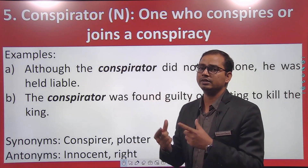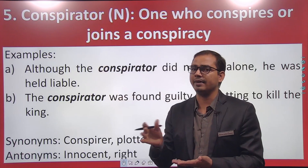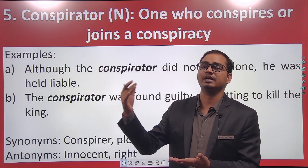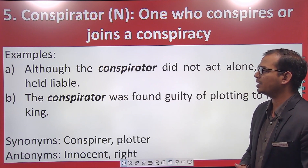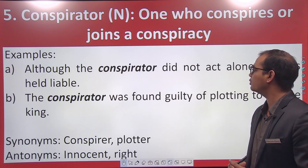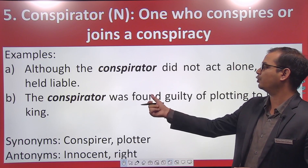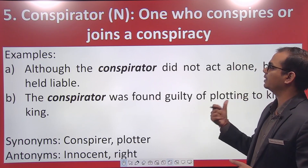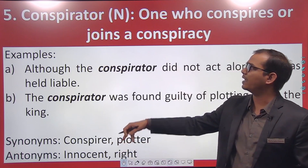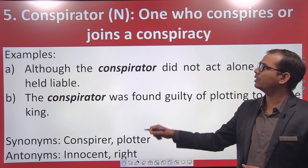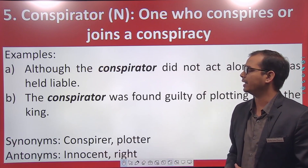The conspirator did not work alone, yet he was held liable because it was through his conspiracy that the act was carried out. Another example: the conspirator was found guilty of plotting to kill the king — so the conspirator was found guilty for planning the king's murder. Synonyms are 'plotter' and 'conspirator' — they are all the same. Antonyms are 'innocent' and 'righteous.'